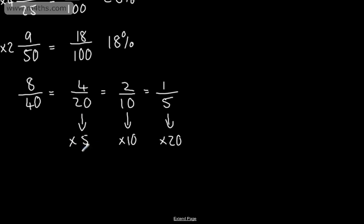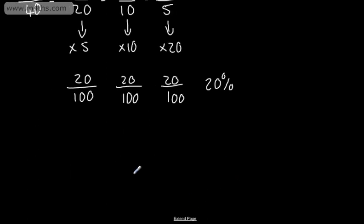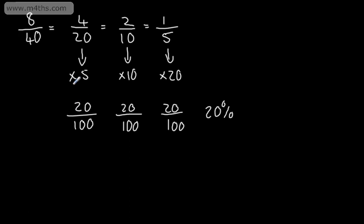Multiplying the numerator by 5 gives 20 over 100. If we use 2 over 10, multiplying numerator and denominator by 10 also gives 20 over 100. And multiplying 1 over 5 by 20 gives 20 over 100 as well — which is of course 20%. All I've done is find a factor of 100 from within this fraction, essentially by simplifying. You can choose any of those routes.